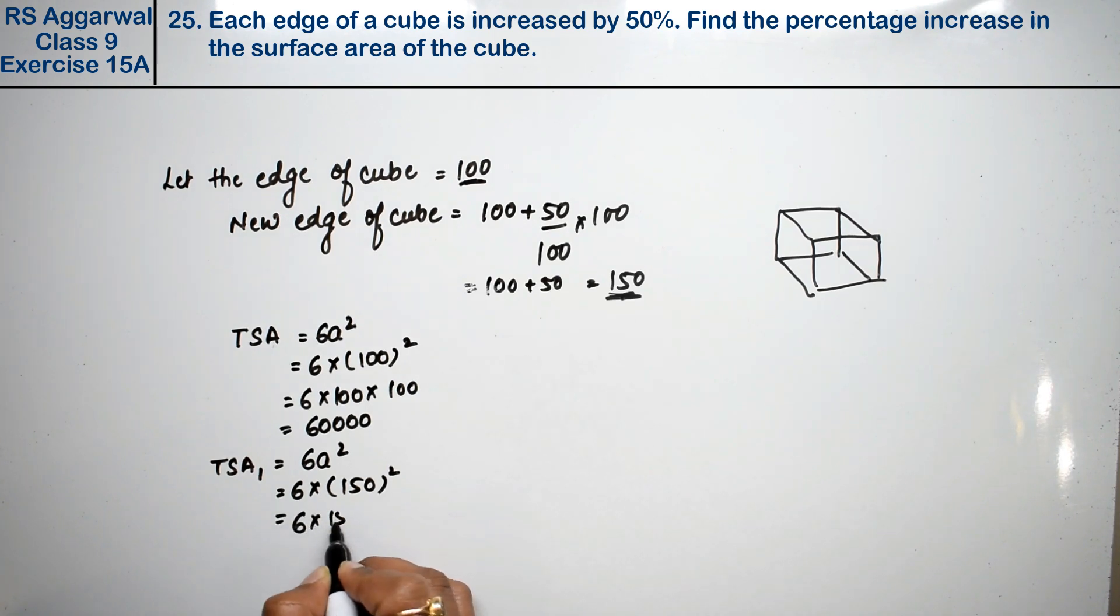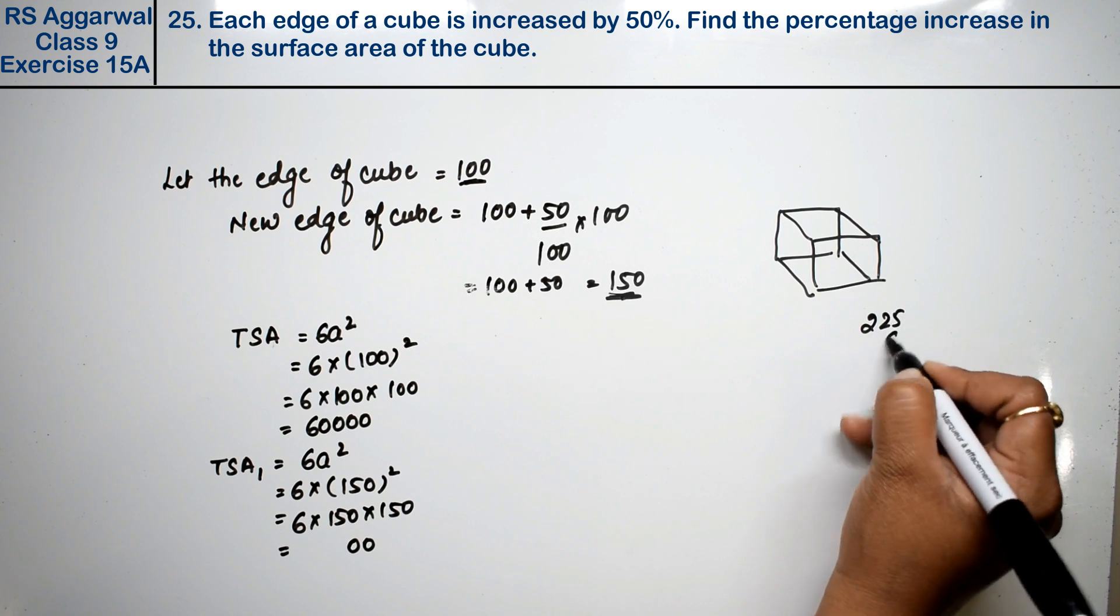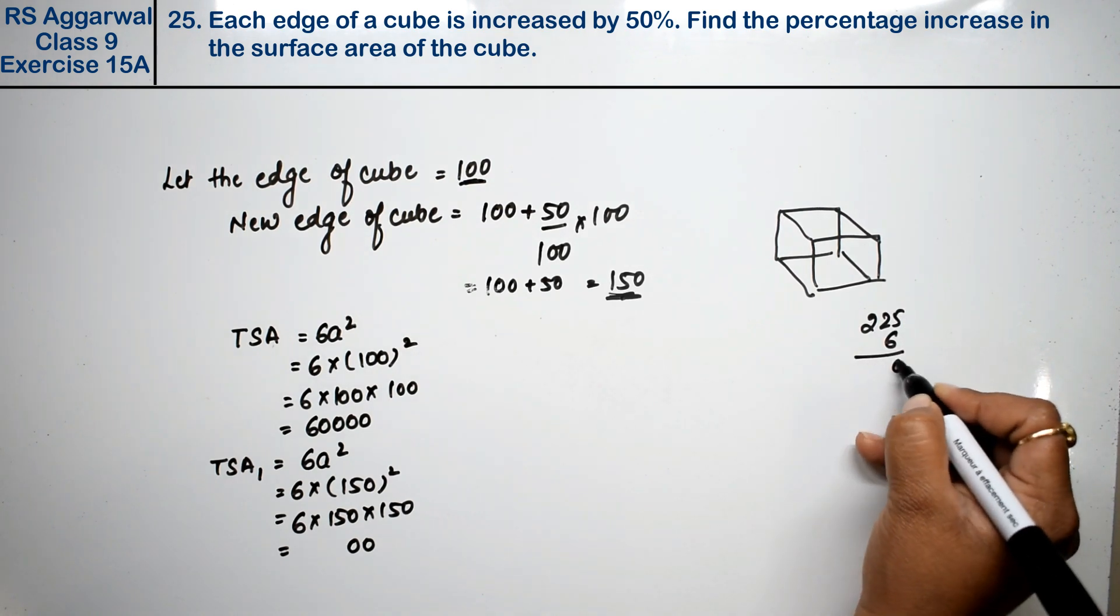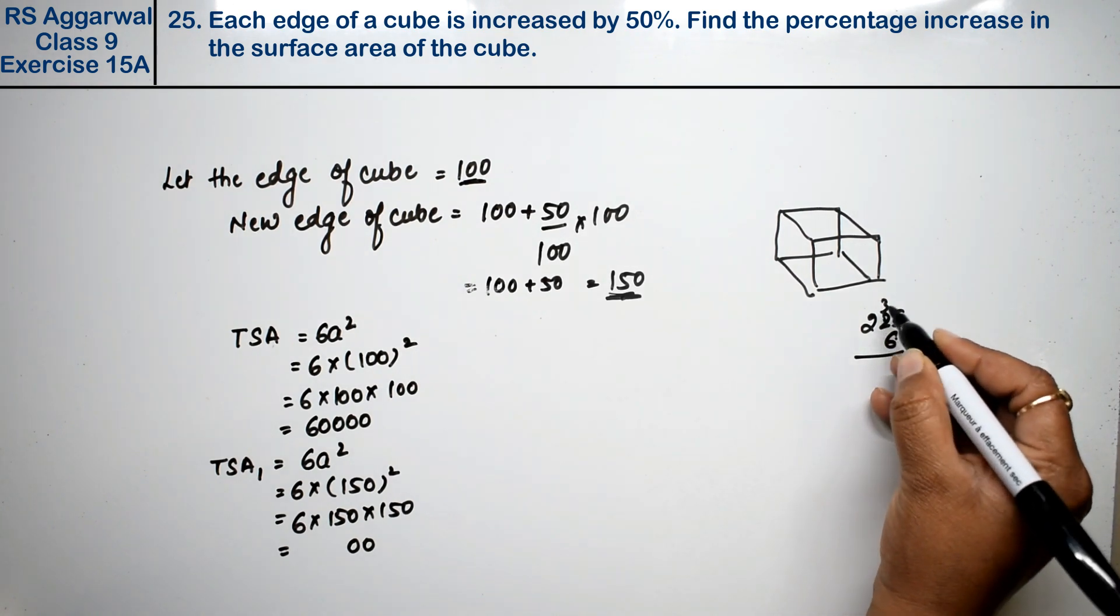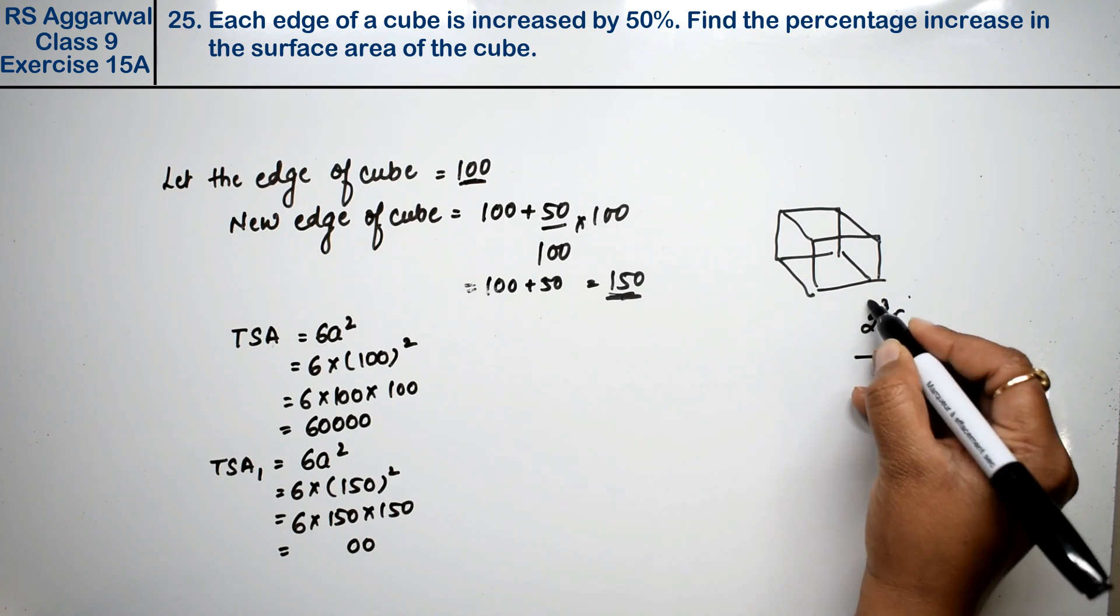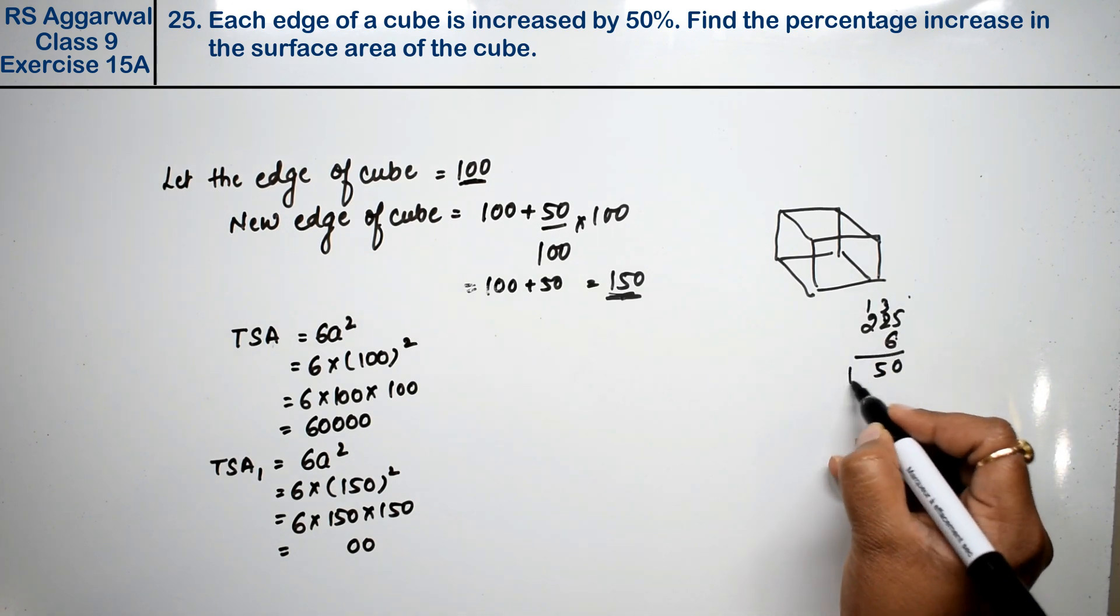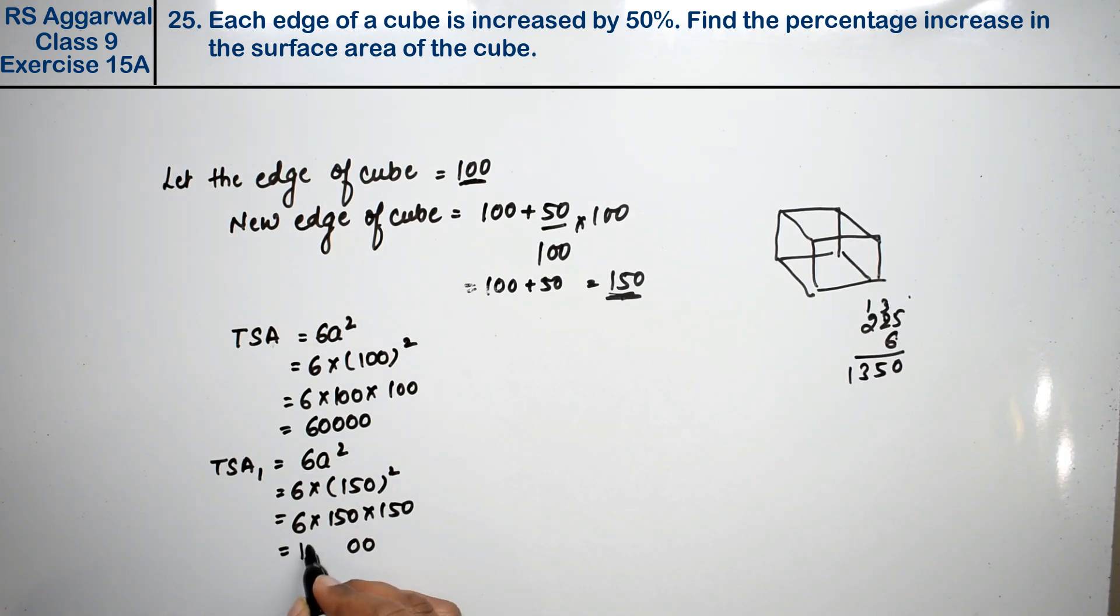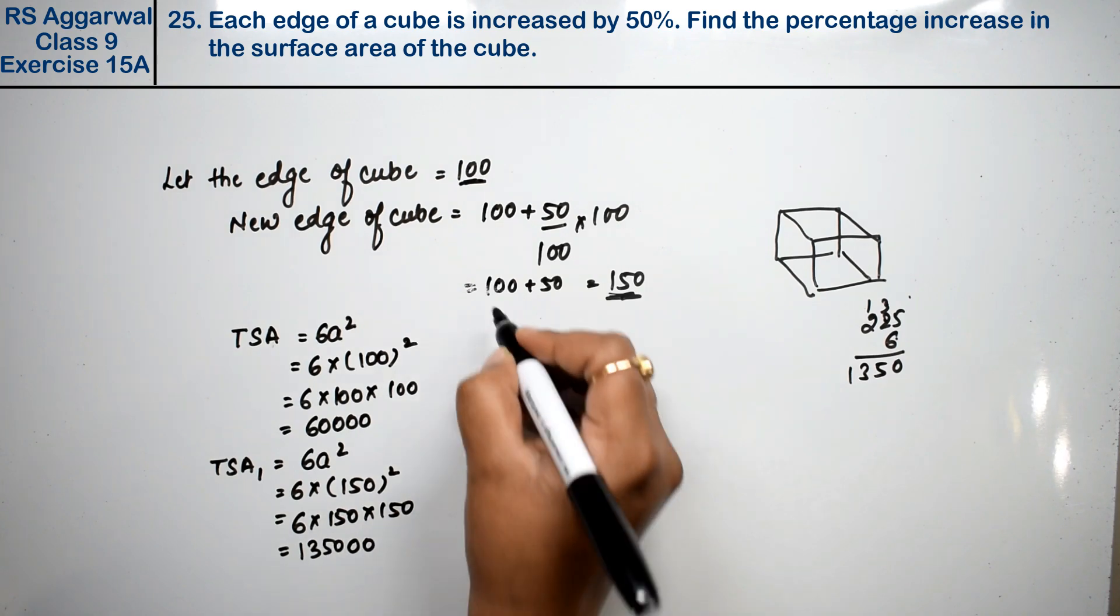6 into 150 into 150. 15×15 is 225 into 6. 6×5 is 30, 3 carry. 12, 13, 14, 15, 1 carry. 1, 3, 6. 2×6 is 12, 13. So here is 135,000.